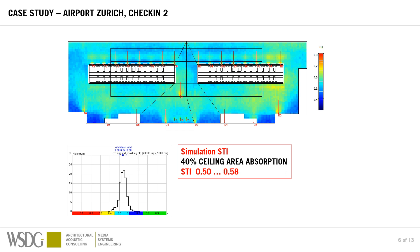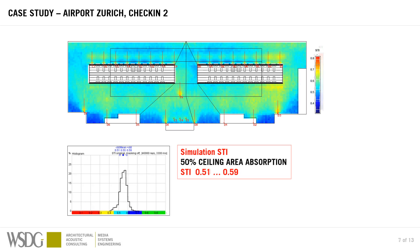Let's increase the absorption quantity and go to 50%. You see there's more yellow in the map, and the distribution graph on the bottom left has shifted further to the right, meaning it slid upward. We have STI values of 0.51 to 0.59. This is pretty good.